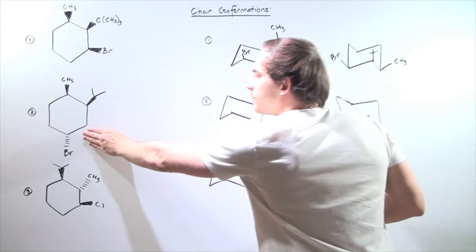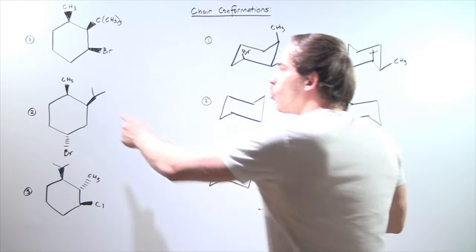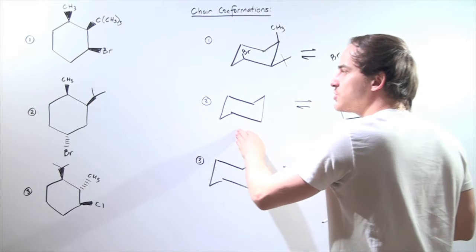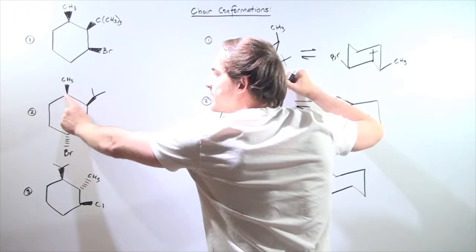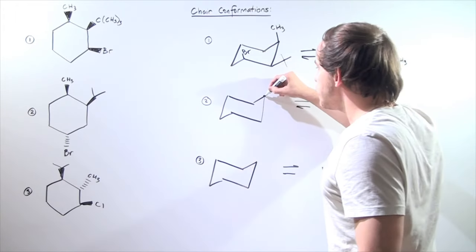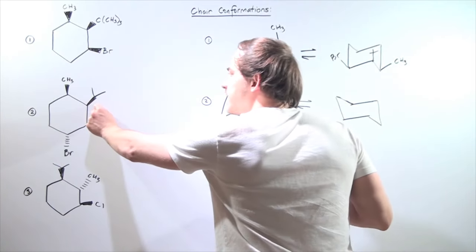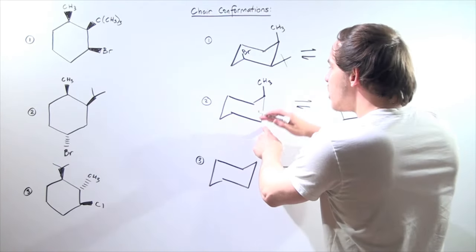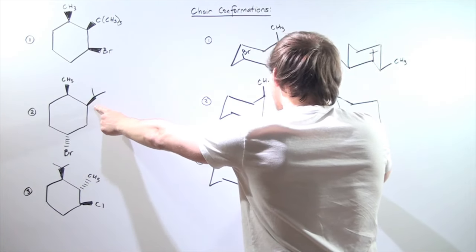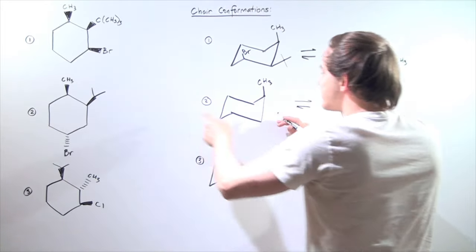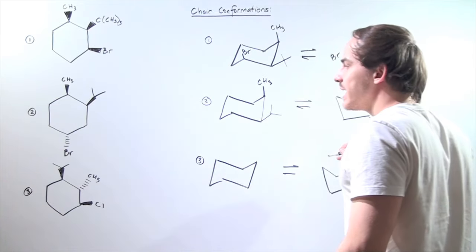Next up is the following cyclohexane. Once again, our job is to choose which carbon on this conformation corresponds to which. Let's say this carbon is this carbon here. Since it's pointing upward, our methyl group must be on the axial position — so this is our methyl group. One carbon over, also pointing upward, is isopropyl. Since it's pointing upward and in this position, it must be equatorial.